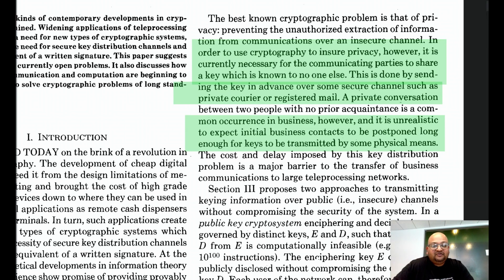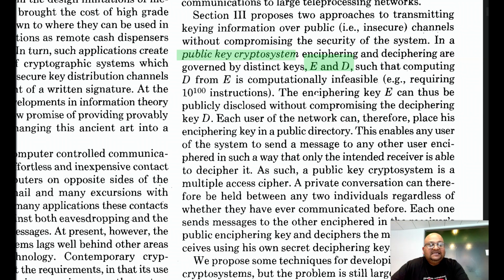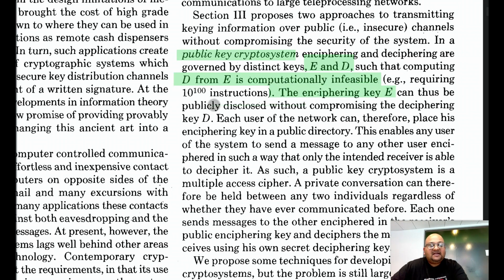What the authors are proposing here is a public key cryptosystem where, instead of one secret key, you have two distinct keys E and D, where E is used for encrypting messages and D is used for decrypting messages. The keys are chosen such that computing the decrypting key D from E is computationally infeasible. This means that the key used for encryption can be made public, and this really is the central groundbreaking idea of this paper.